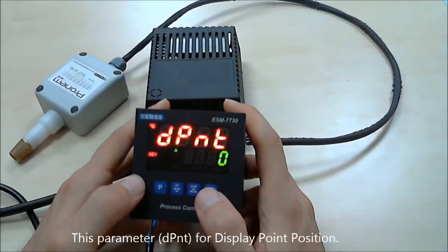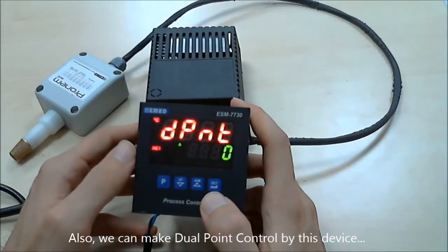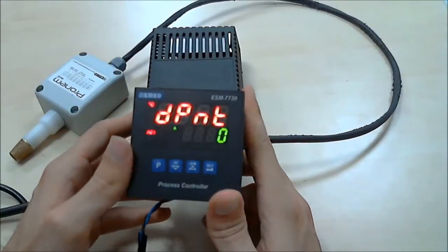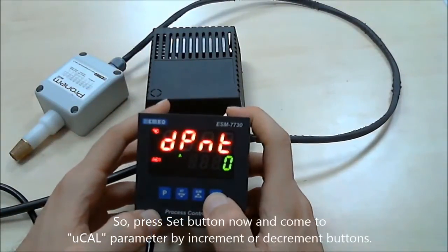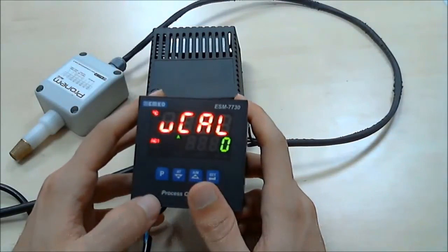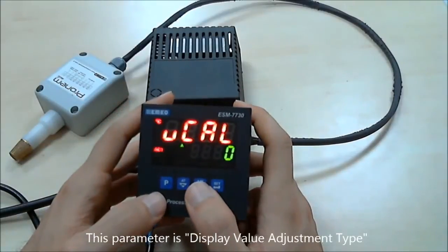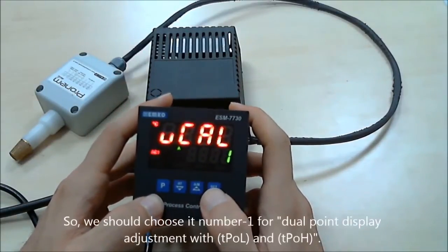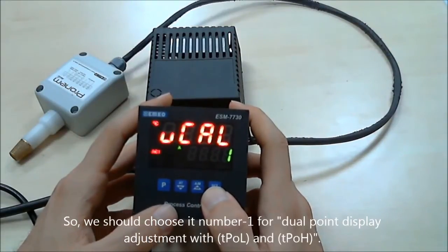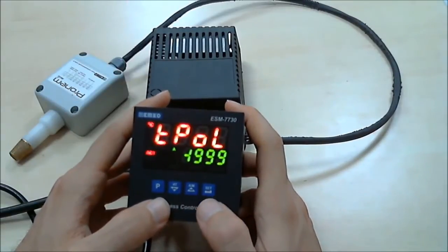Then we can control by dual point operation with this device. Press set button. This is the display value adjustment type parameter. We should choose number 1 for dual point display adjustment and confirm with set button.